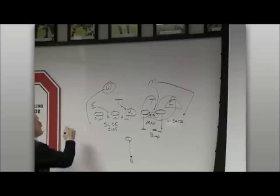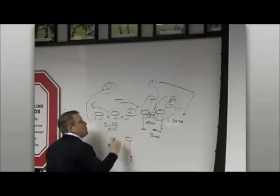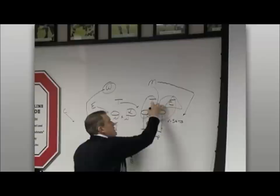Traditionally, when a fourth rusher comes to the slide side, you're going to get somebody working to the front side of the protection. So you get three on this side, and then you'll end up getting probably two to the front side with the end dropping out.